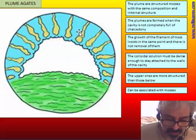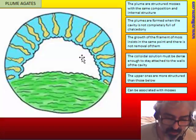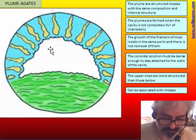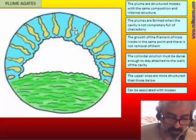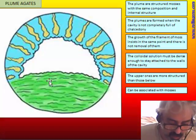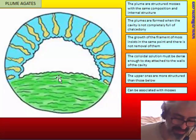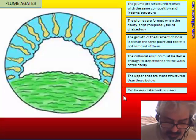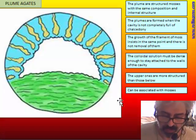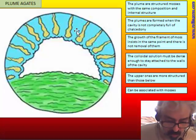Plume can survive only when there is no further dilution inside the cavity — so the last episode is dry. If there is further dilution, the plume will fall down and accumulate together with moss, and we cannot distinguish moss from plume at the base. So plume, if associated with moss, are formed later. The last episode is the plume formation. In cases where plumes are found in both the upper and lower parts, the upper ones are more structured.